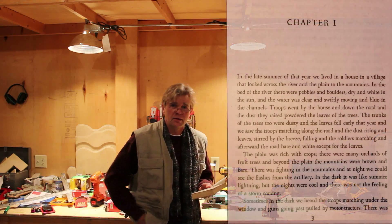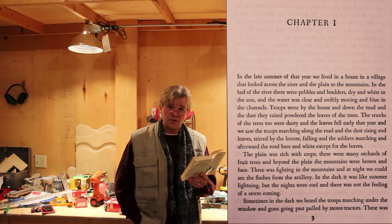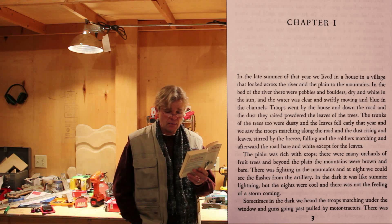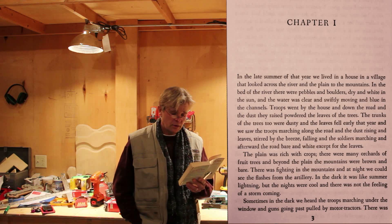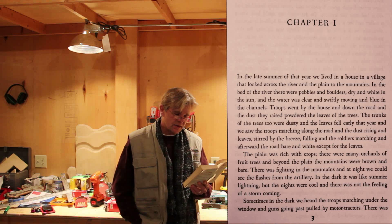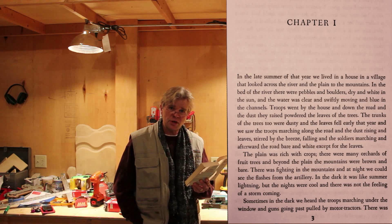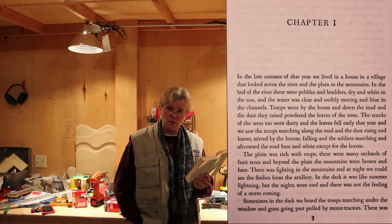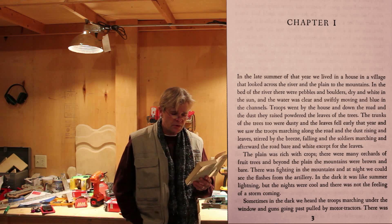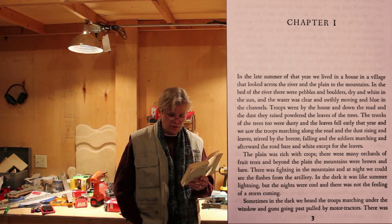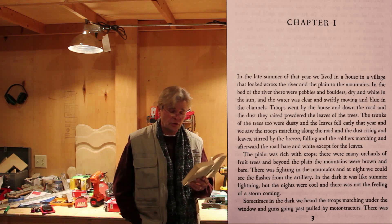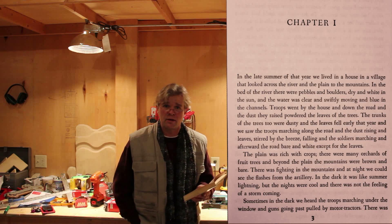Chapter one. Almost 90 years old. 'In the late summer of that year, we lived in a house in a village that looked across the river and the plain to the mountains. In the bed of the river, there were pebbles and boulders, dry and white in the sun. And the water was clear and swiftly moving, and blue in the channels. Troops went by the house and down the road, and the dust they raised powdered the leaves of the trees. The trunks of the trees, too, were dusty, and the leaves fell early that year. And we saw the troops marching along the road, and the dust rising, and leaves stirred by the breeze falling, and the soldiers marching. And afterward, the road bare and white, except for the leaves.'